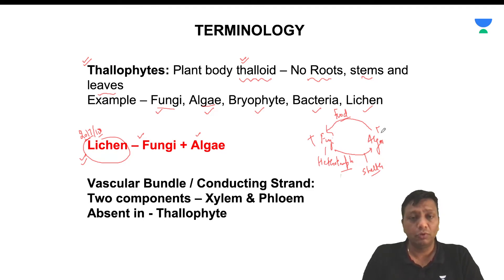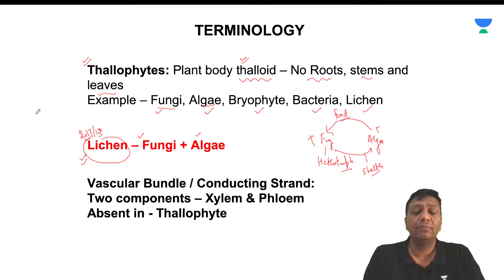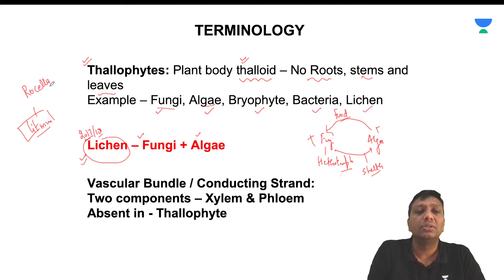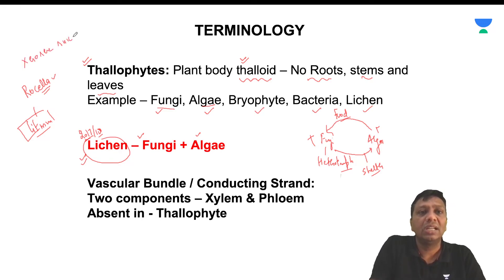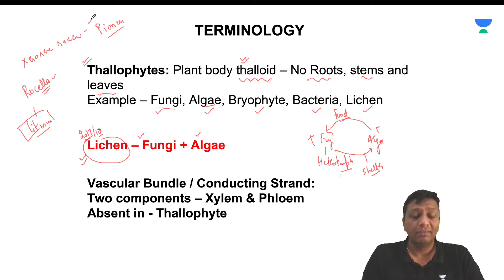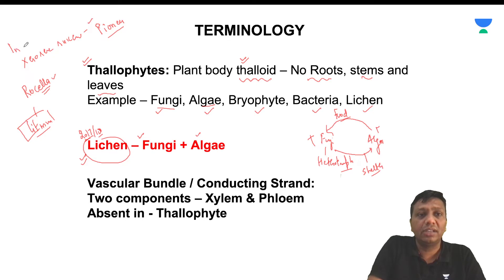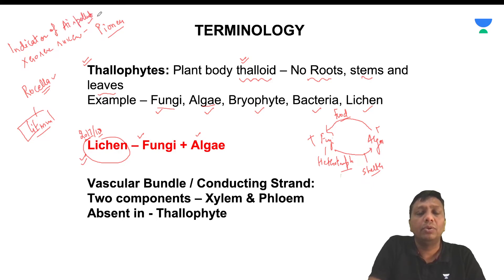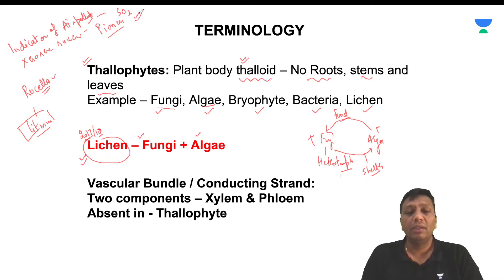Lichen has many benefits: it can be used as food, as fodder for cattle, and has medicinal and cosmetic values. The litmus paper you know from school — used to check pH — is also developed with the help of lichen. This is called Rossella. In the case of xerosere succession, lichens are the pioneers — the first organisms to appear in dry areas before vegetation develops. Lichen is also an indicator of air pollution, specifically against sulfur dioxide gas. This is a very important topic for examinations.